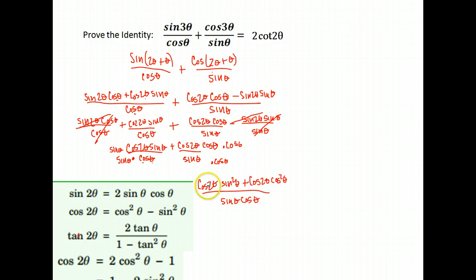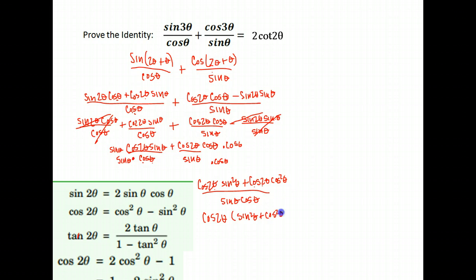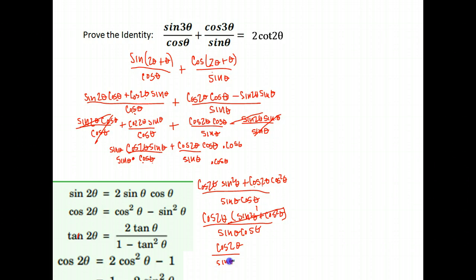Notice on top I have cosine 2θ in both places, so I can factor out a cosine 2θ, leaving sine²θ plus cosine²θ — which is one of our basic Pythagorean identities and equals 1. So now I'm down to cosine 2θ over sine θ cosine θ.